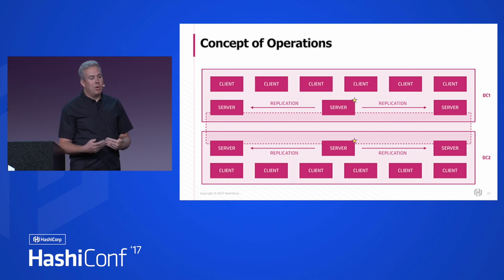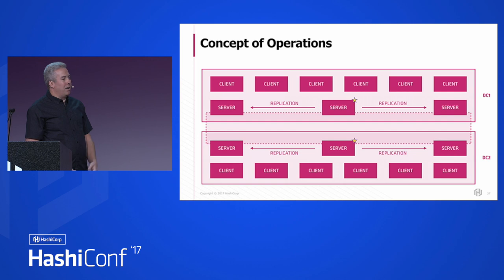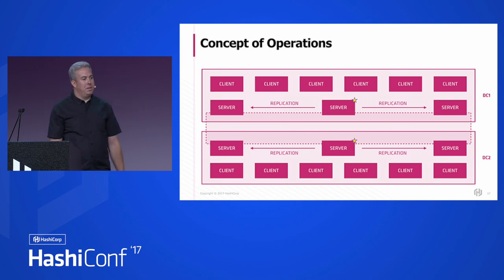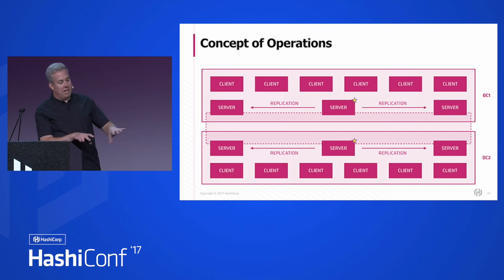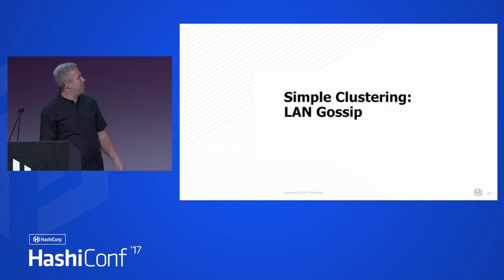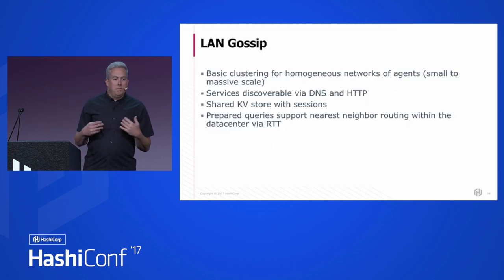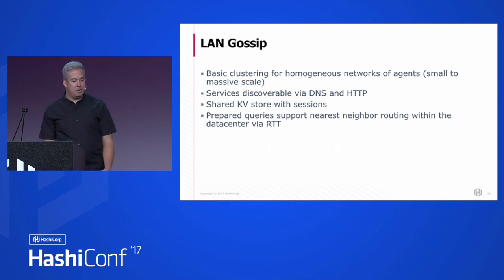The reason we've had to make more advanced networking models is that it's not always possible to have simple network configurations. We've learned from our customers that I can't connect all my data centers worldwide in a big mesh — I have sets of things that can't talk to each other, or I don't trust this team so I want them isolated. So let's start with the first model for clustering: LAN gossip. This is what you get when you join a cluster together to form a data center. It's in the open source version of console — it's been there since day one. Agents are all homogeneous and in a full mesh.